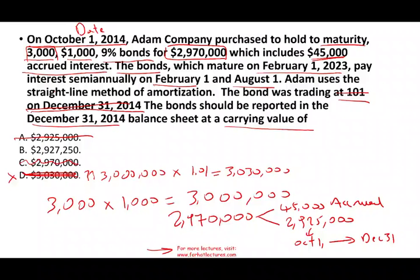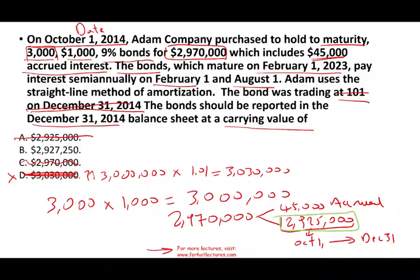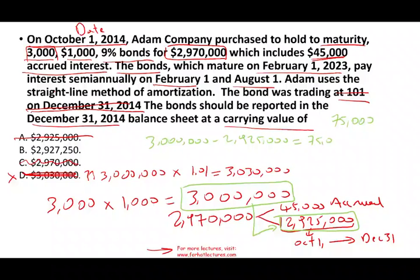Let me show you specifically how the answer is B. The bond's true value at purchase is $2,925,000, meaning this is a discount bond with a discount of $75,000 — that is, the $3,000,000 face value minus $2,925,000 paid. Now we amortize the discount. In this problem, they ask us to use the straight-line method.